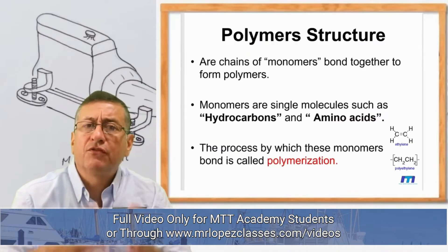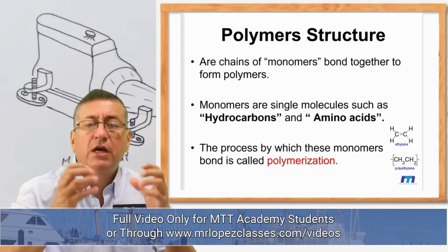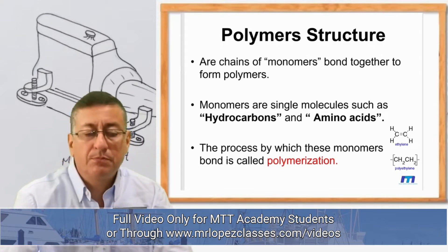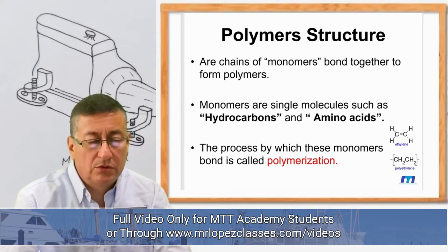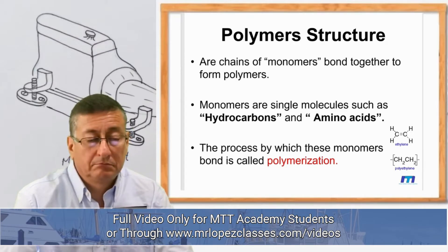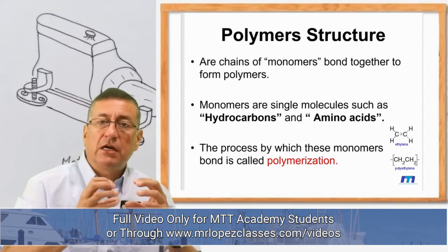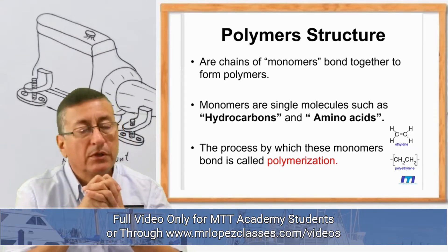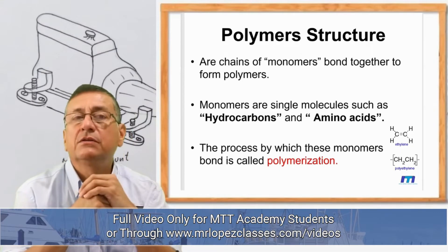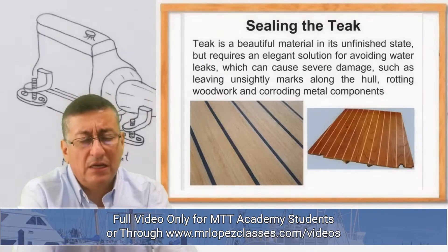We are going to check the structure of polymers. Polymers are chains of monomers bonded together. Monomers are single molecules — for example, hydrocarbons or amino acids. The process of connecting monomers together is called polymerization: the combination of different monomers in a chain.